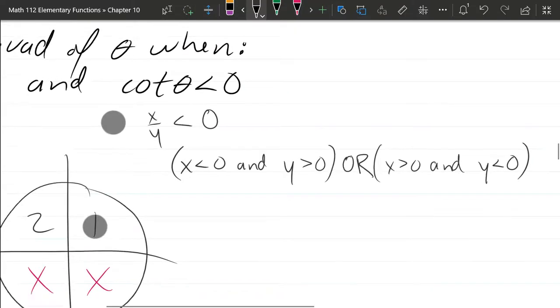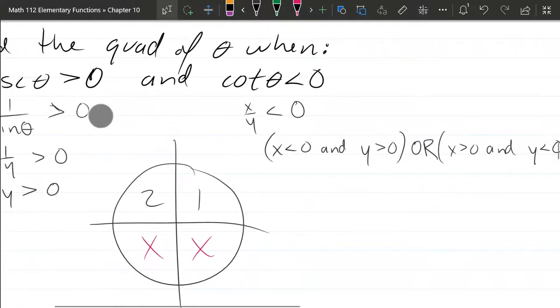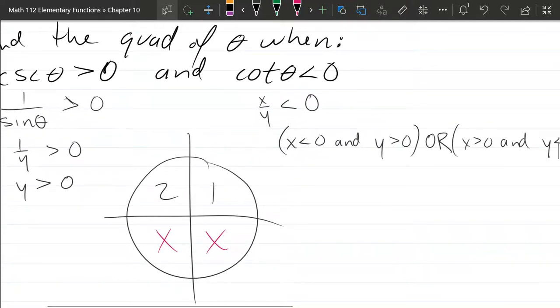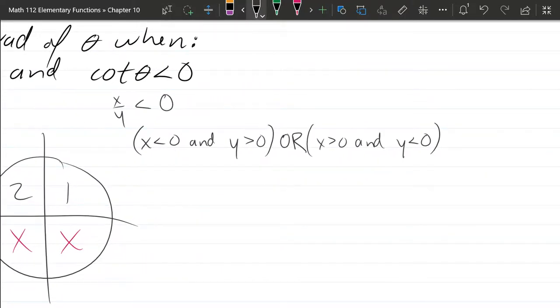All right, which of these is occurring? Well, I took care of the cosecant first because I could immediately narrow it down to y being positive. So y being positive is what's happening, which means y cannot be negative.